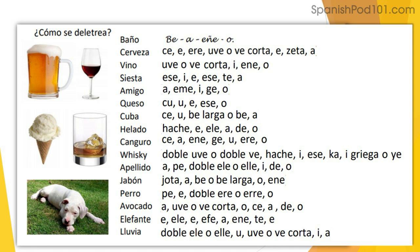Continuing spelling answers: Apellido — A, P, E, doble L, I, D, O. Jabón — J, A, B (o B larga), O con acento, N. Perro — P, E, doble R, O. Abocado — A, V corta, O, C, A, D, O. Elefante — E, L, E, F, A, N, T, E. Lluvia — doble L, U, V corta, I, A.